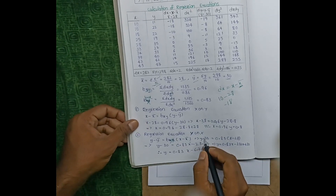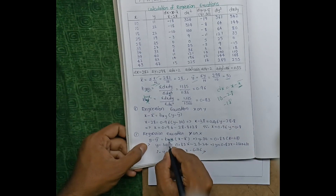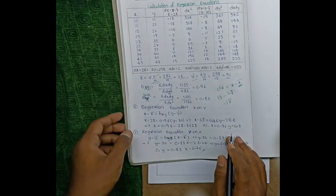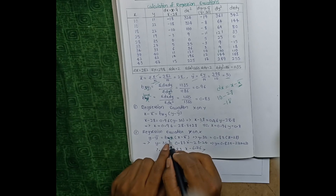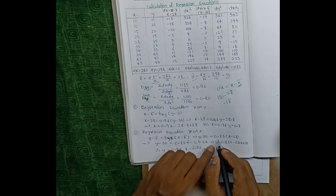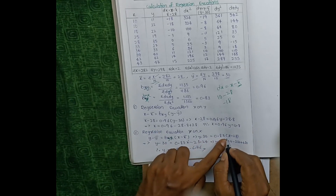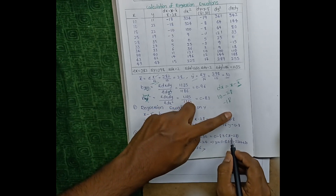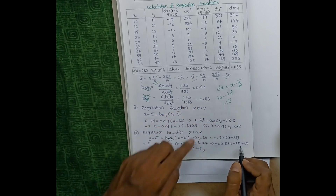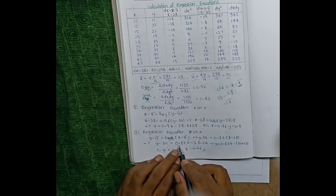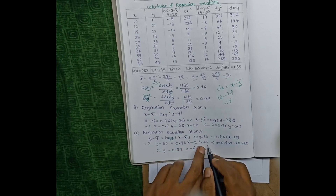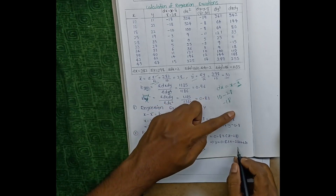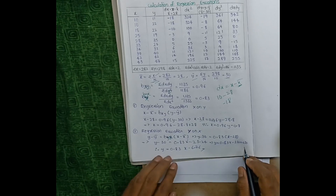For the regression equation y on x: y minus ȳ equals byx times (x minus x̄). The value of byx is 0.83. So: y minus 30 equals 0.83 times (x minus 28). Expanding: 0.83x minus 23.24. Bringing 30 to the other side: y equals 0.83x minus 23.24 plus 30, giving the final equation.